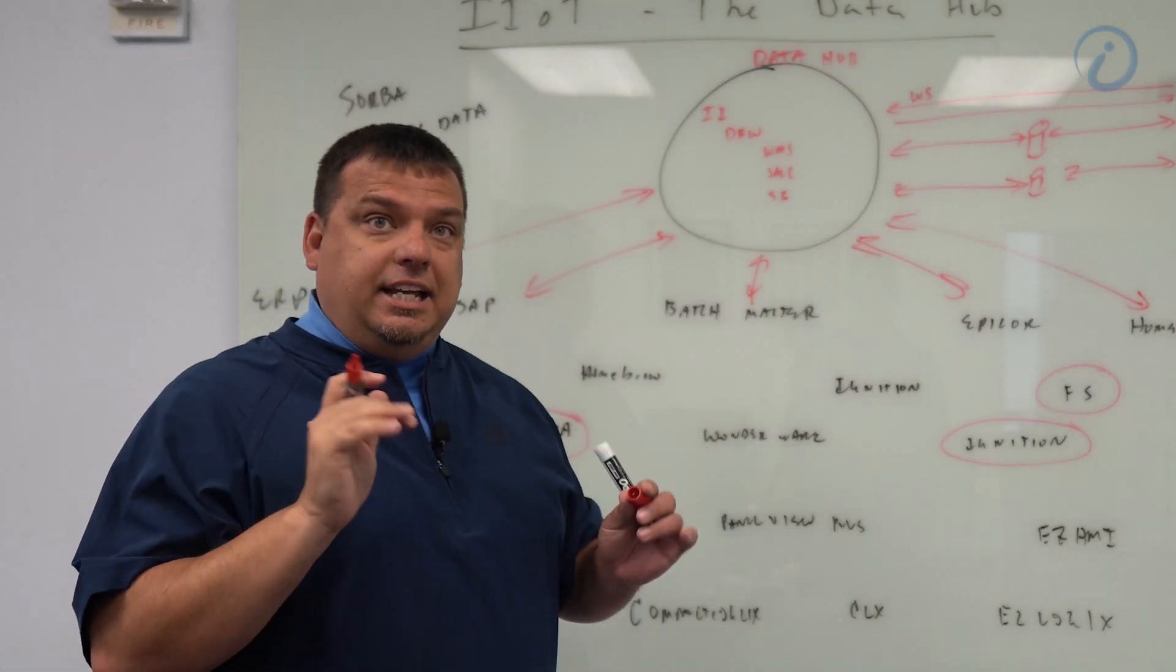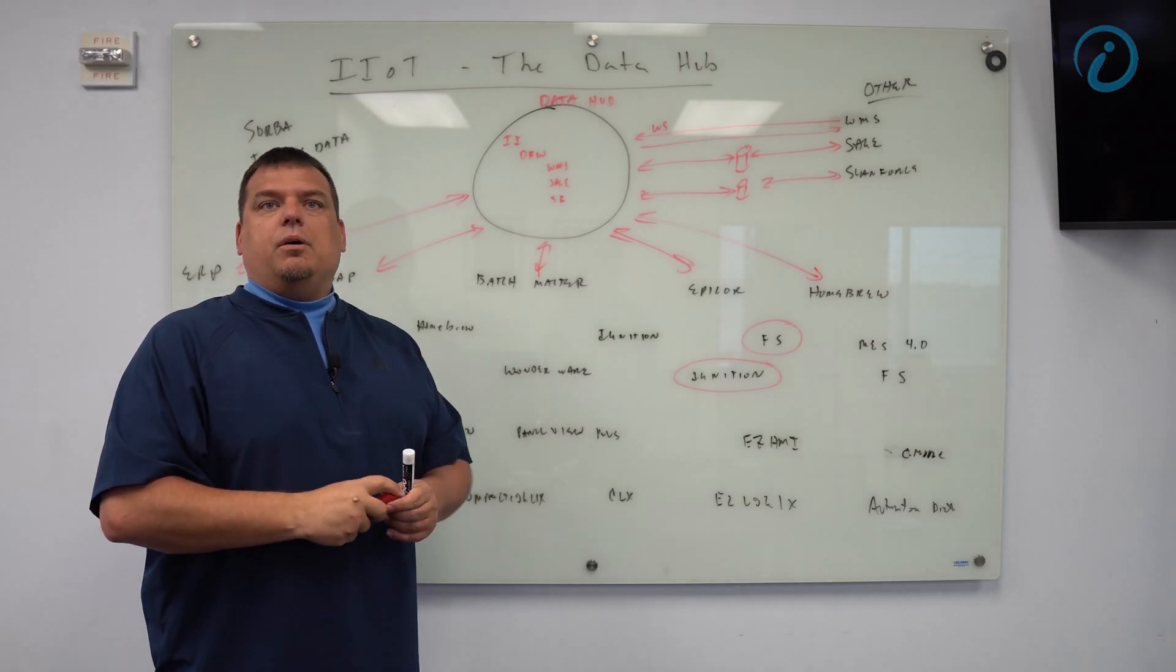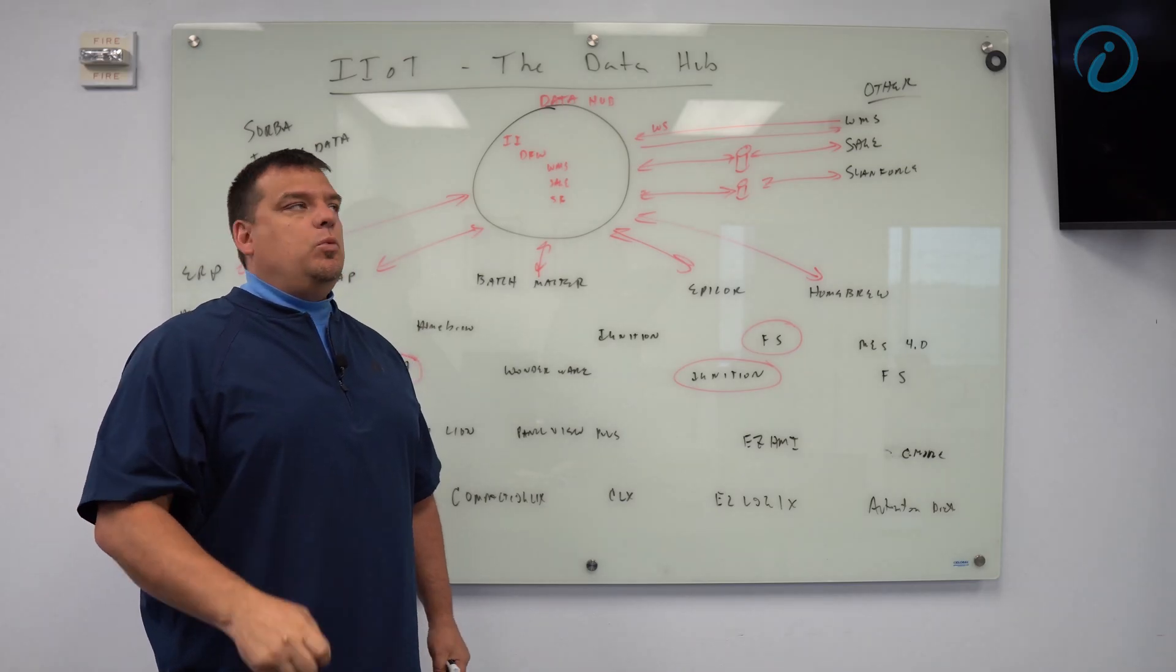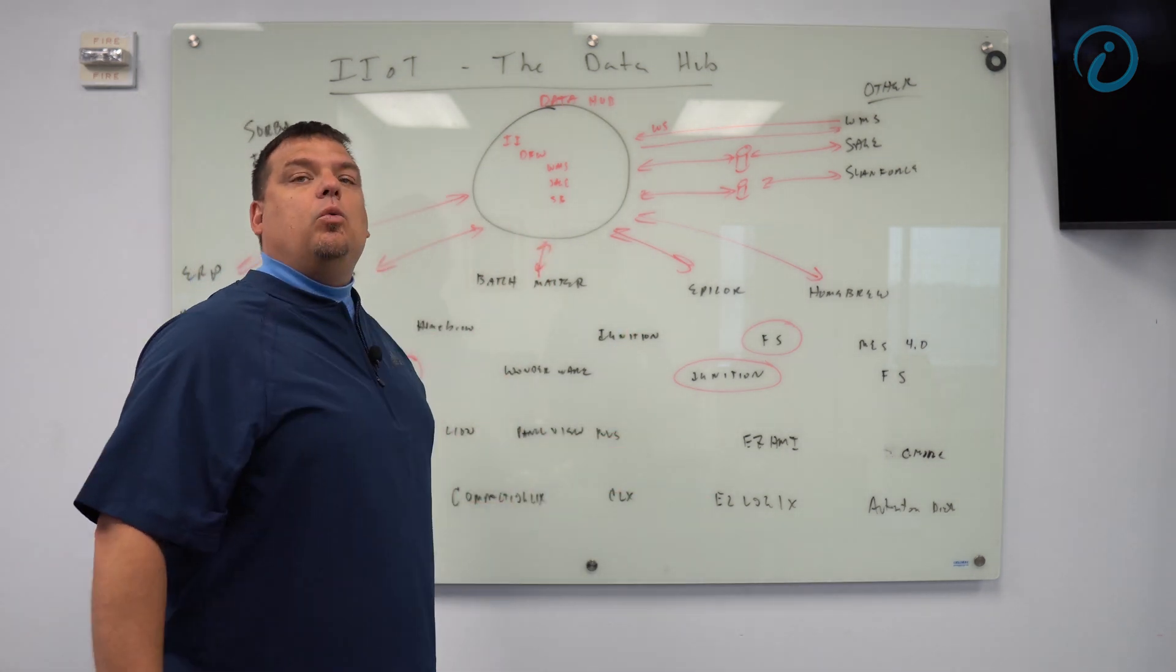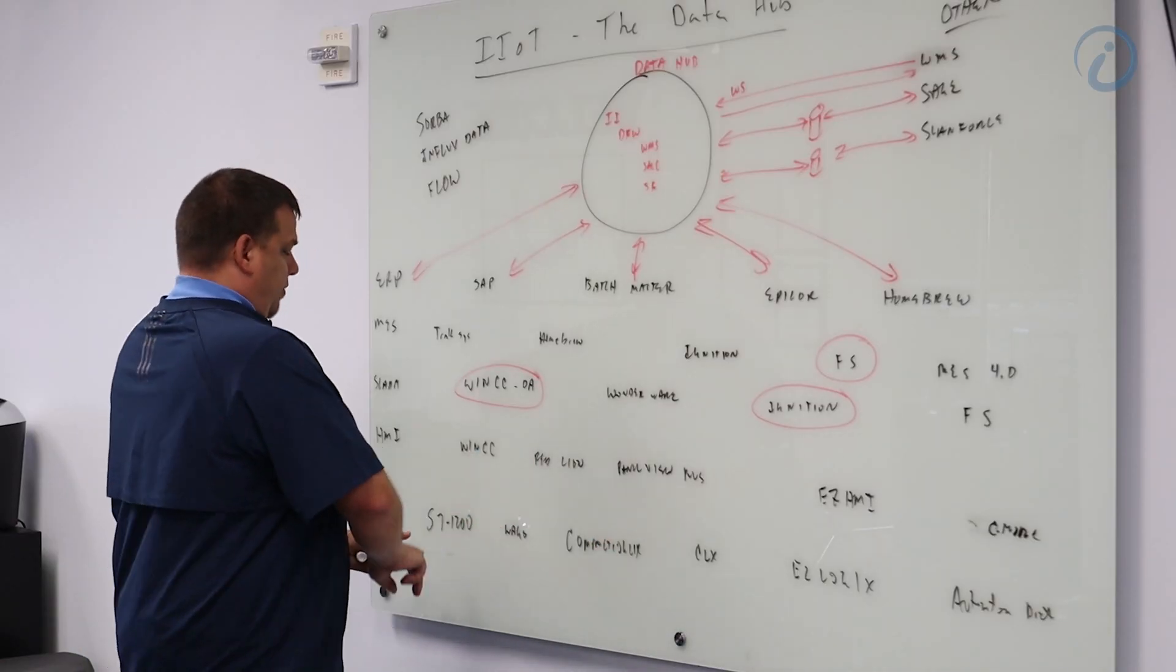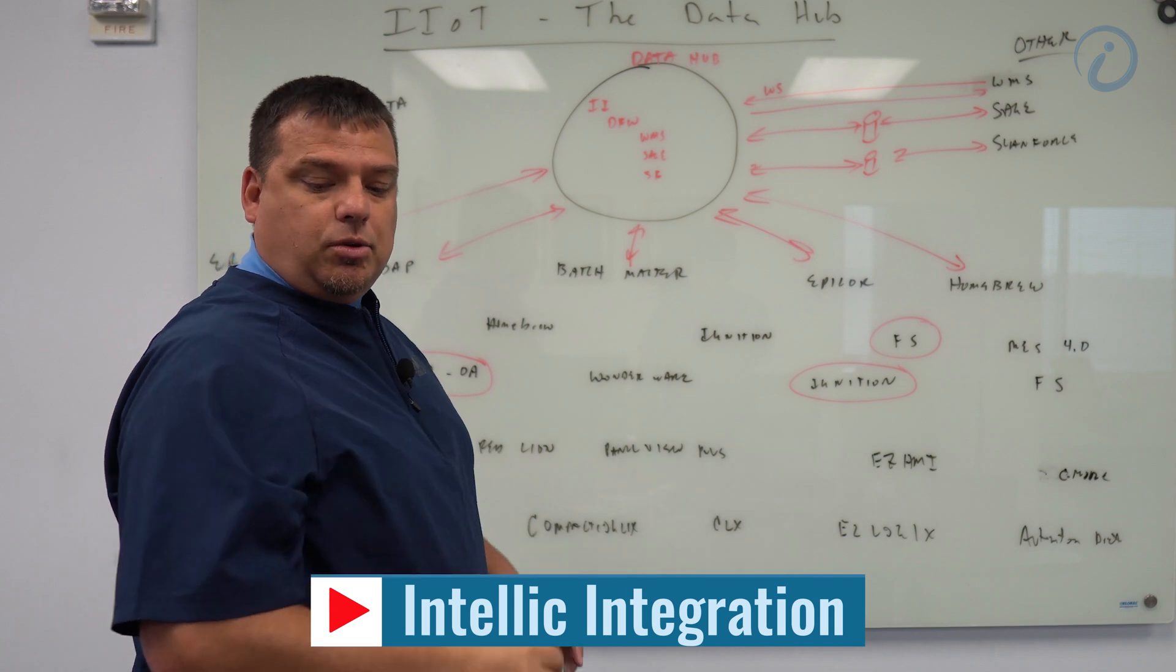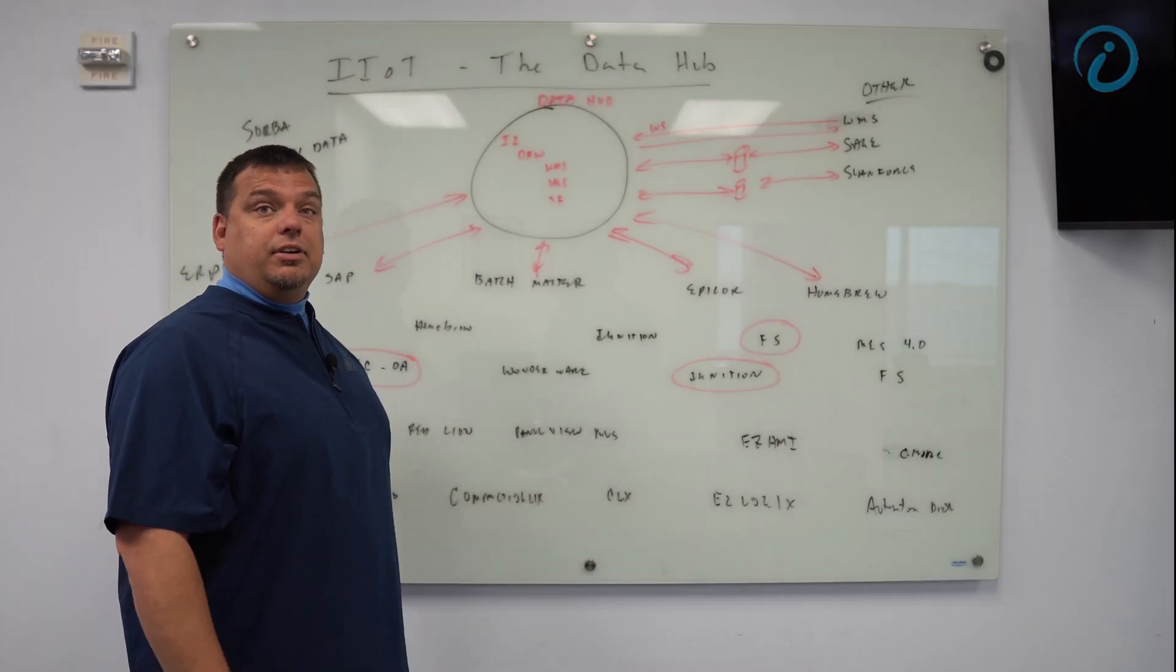You want to know the number one question that gets brought to us, or the number one pain point that clients tell us about? That pain point is: we have all these disparate systems and we want to get all of our data in one place. You'll notice we're not passing this information from S7 1200 to WinCC. What we're doing is we're taking both nodes directly into our data hub, and we'll talk about why that's important in a later video.